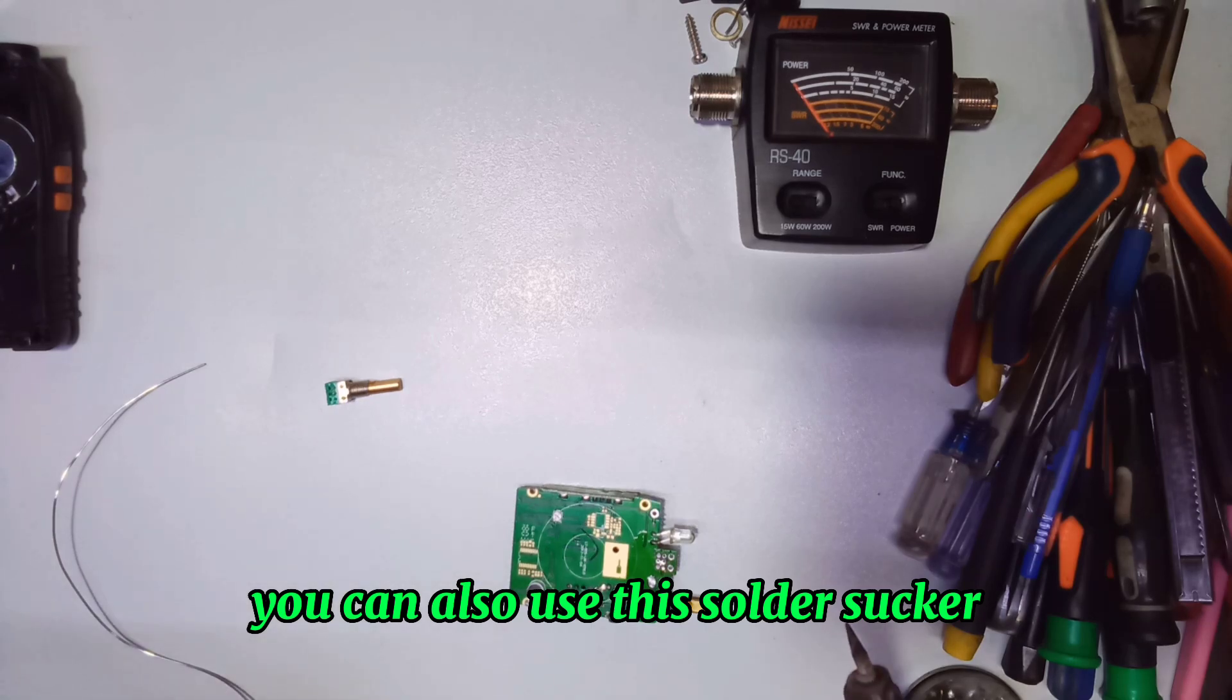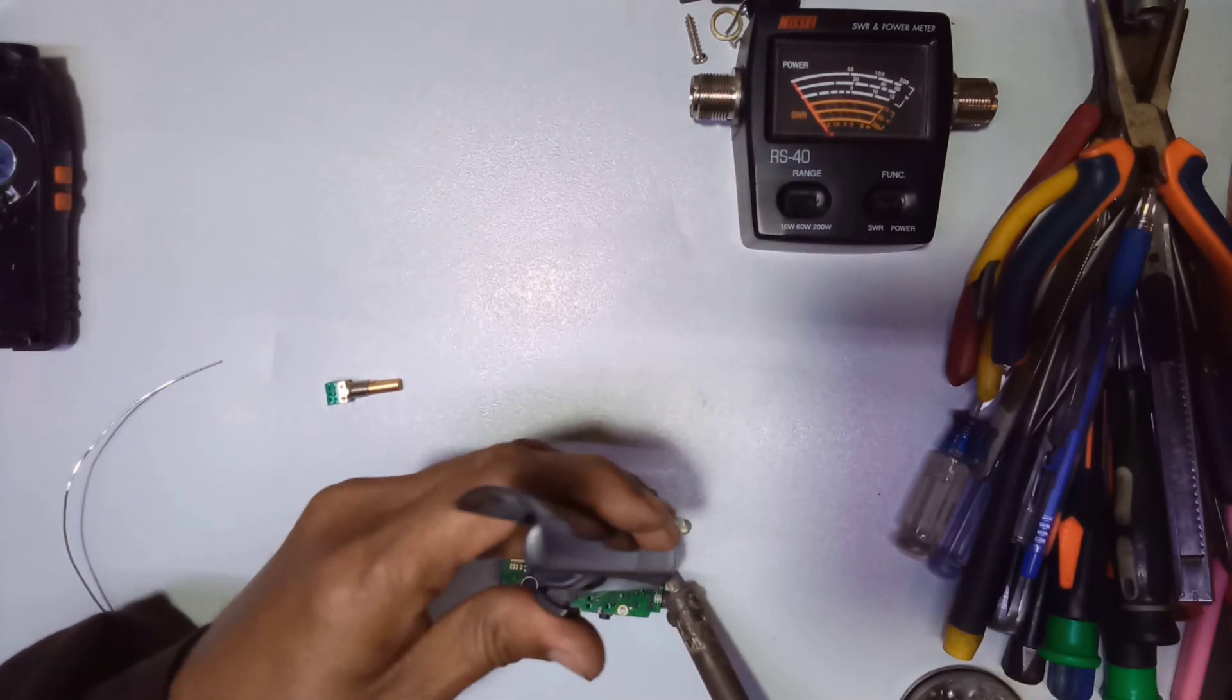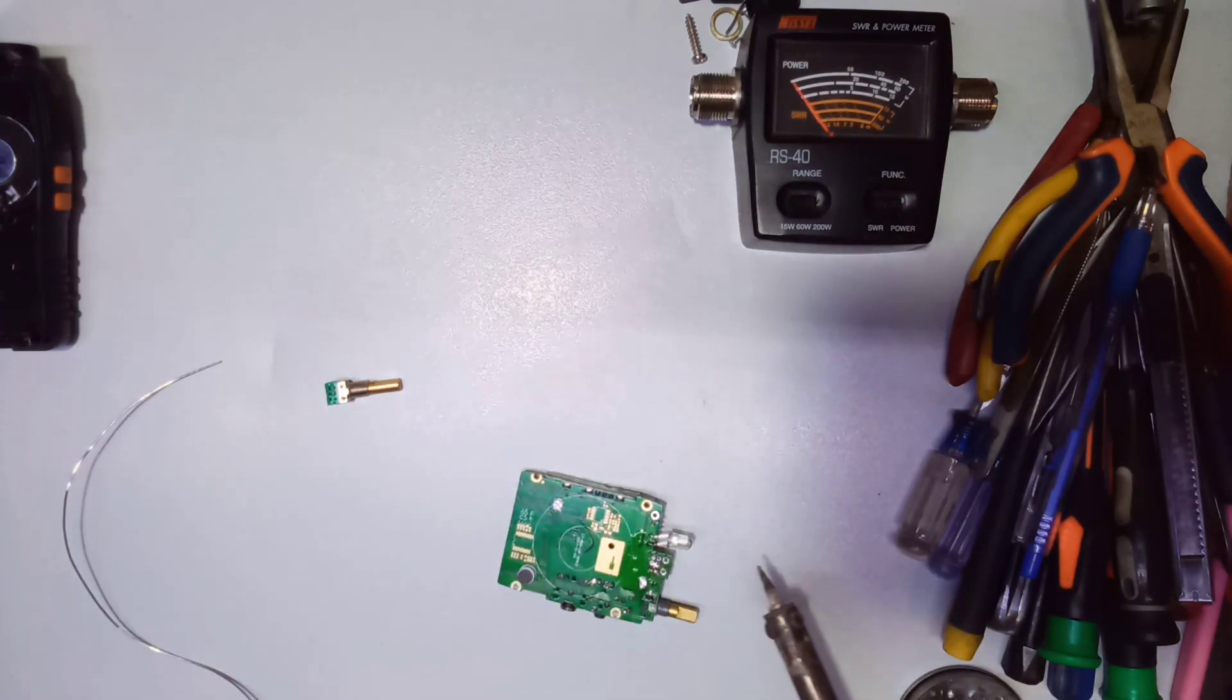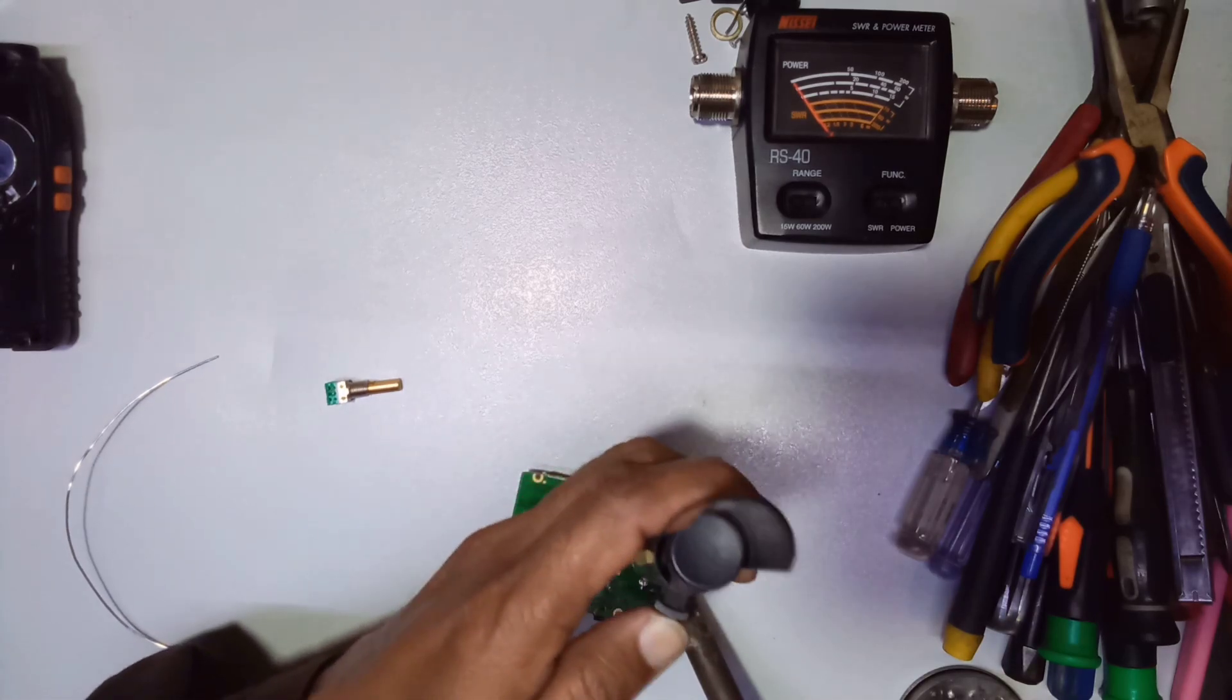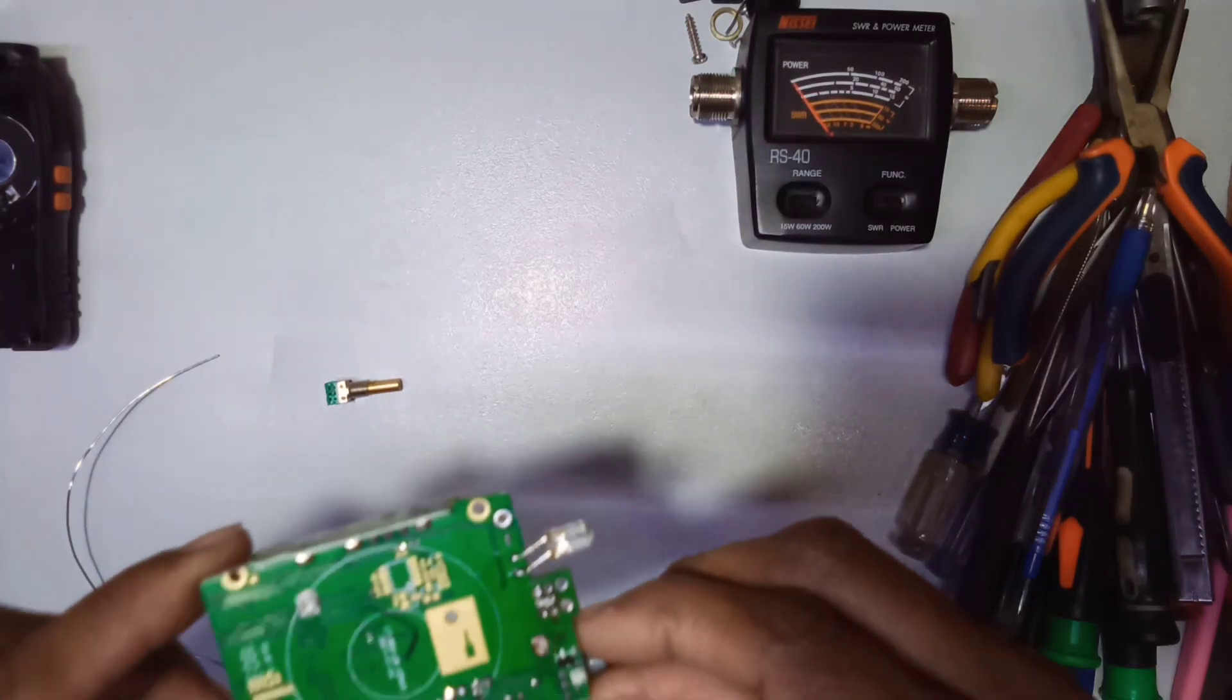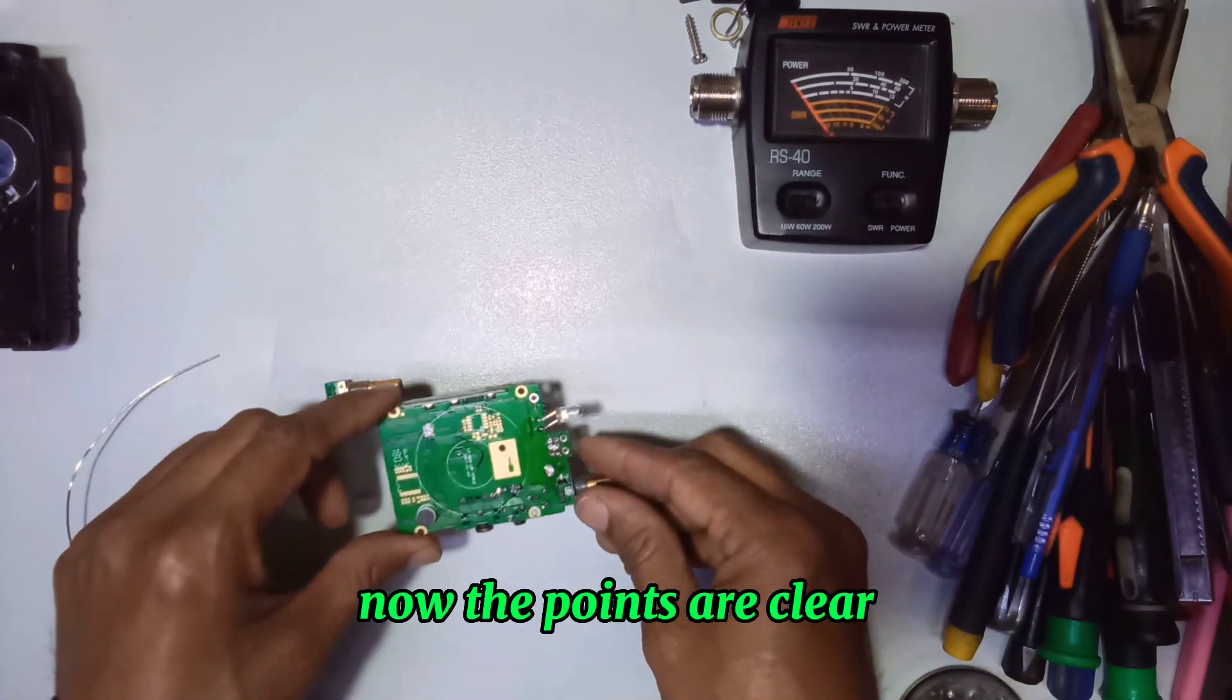You can also use this solder checker to remove the solder from the points. Now you can see the solder has been removed. Now the points are clear.